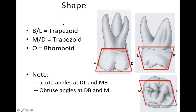We'll look at the shape first. From the buccal or lingual it's going to be trapezoid, from a mesial or distal it's also going to be trapezoid, and from an occlusal it's going to be rhomboid. Notice we've got acute angles at the distal lingual and the mesial buccal, and obtuse angles at the distal buccal and the mesial lingual — this has been known to show up on several board-type questions.